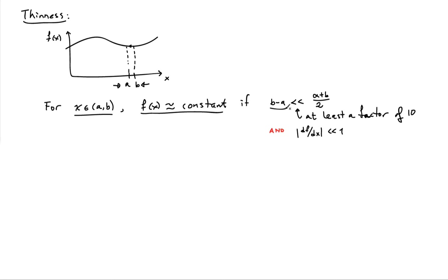Number one is if the range that I'm looking at is small relative to the mean value of the range, and by small I mean by at least a factor of 10, and I know that the rate of change of f is small, then I'm very well justified in assuming that the function is constant over this range.